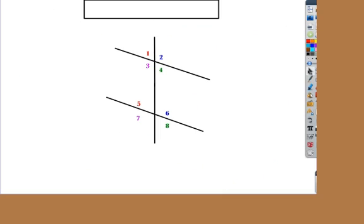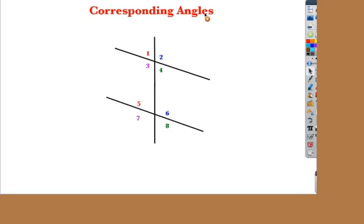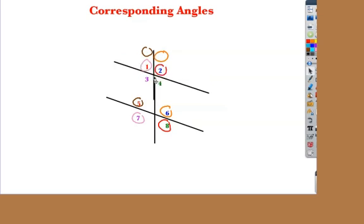With corresponding angles: angle two matches with six, because they're above and to the right of the transversal. Angle four and angle eight are below the parallel lines to the right of the transversal. Angle one and angle five are above the parallel line to the left of the transversal. And three and seven are below and to the left. Watch what happens when I take this top group of four and set it on the bottom group of four — they match up. If I take my transversal, cut it in half, and lay the top group of four angles on the bottom group, they match up.